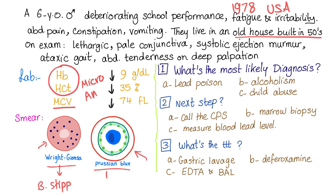Using the Prussian blue stain, we find ringed sideroblasts — sideroblastic anemia, as discussed in a previous video. This is due to lead poisoning, because lead destroys your mitochondria. So the most likely diagnosis is lead poisoning.